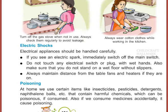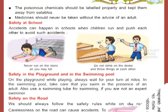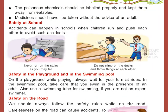At home we use certain items like insecticides, pesticides, detergents, naphthalene balls, etc., that contain harmful chemicals which can be poisonous if consumed. Also, if we consume medicines accidentally, it can cause poisoning. Poisonous chemicals should be labeled properly and kept away from eatables. Medicines should never be taken without the advice of an adult.